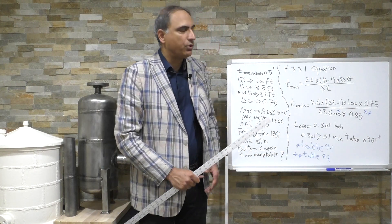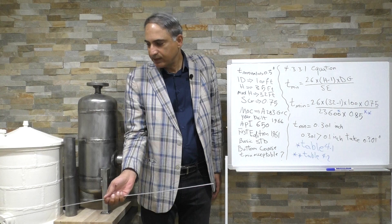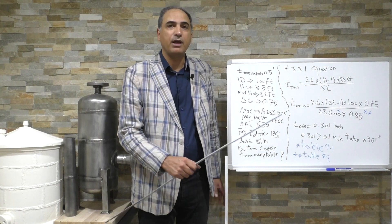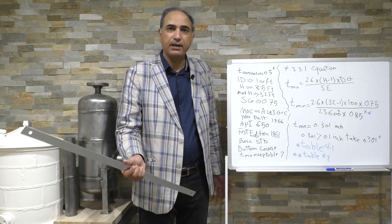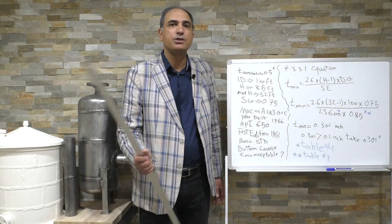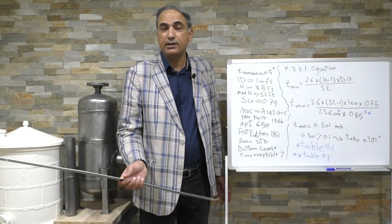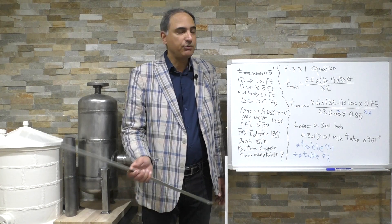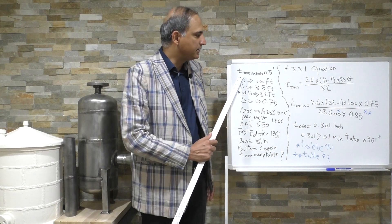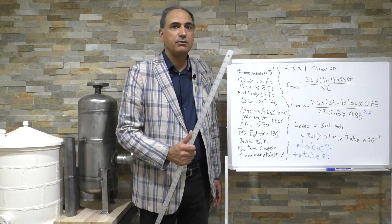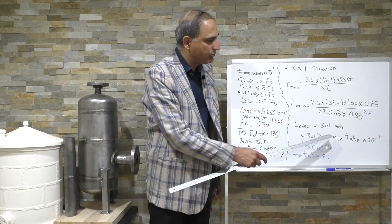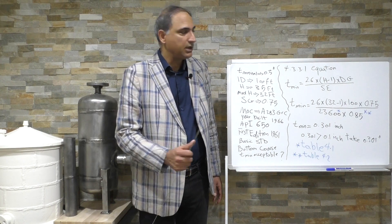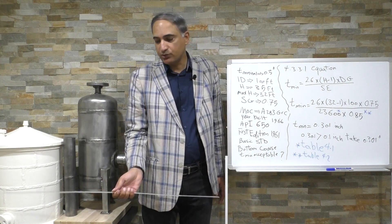So our minimum acceptable thickness is going to be 0.301. So if we have this storage tank and for any reason this wall thickness goes below 0.301, we have to do something. Either we're going to repair it or replace the shell course or make a fitness for service evaluation and give a little bit more life for our storage tank. Up to 0.301 is okay.